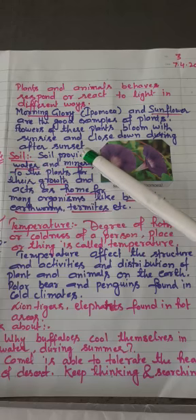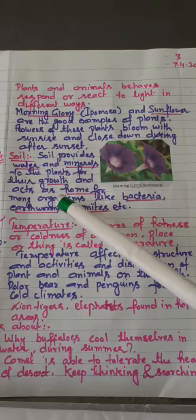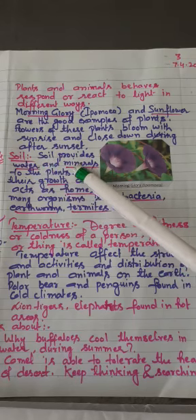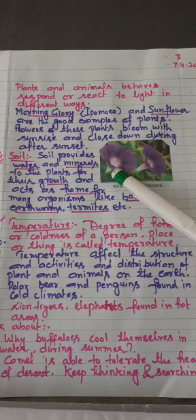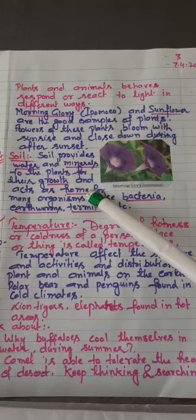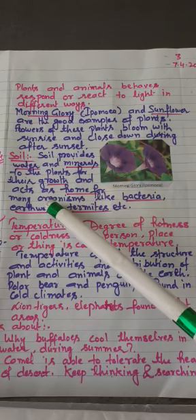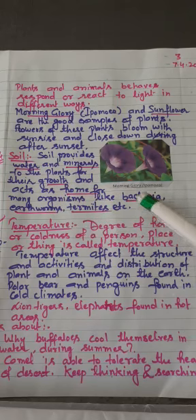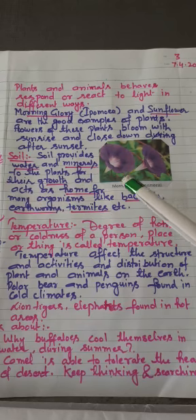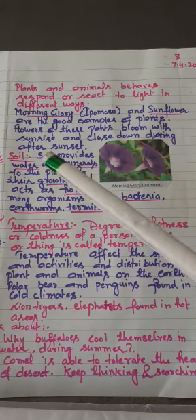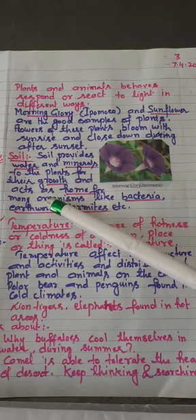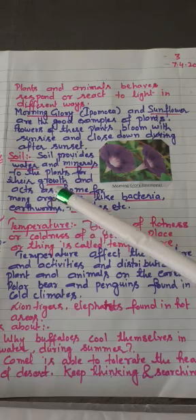Soil is the next component of the abiotic environment. Soil provides two things to living organisms: one is water and minerals for the plants to perform photosynthesis, and next it acts as the home for many organisms like bacteria, earthworms, termites, rats, etc. In this way, soil is also an important part of the abiotic environment.